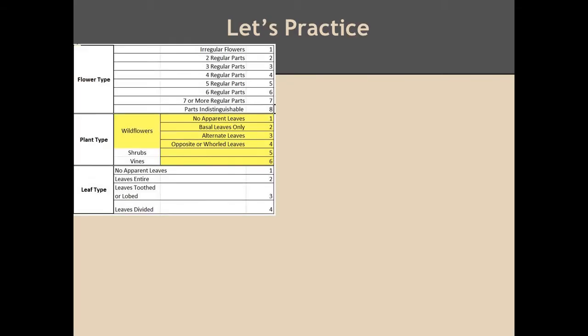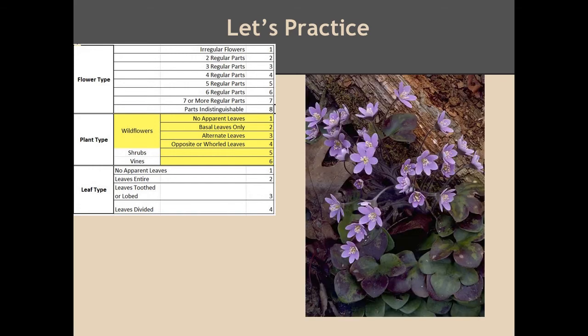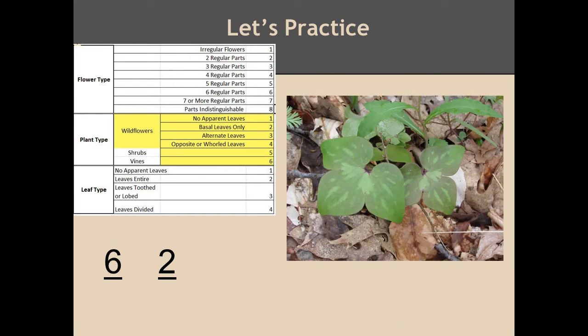Now that we have walked through the process, try practicing with the next seven flowers using the chart in the upper left-hand corner. I will give you about four seconds per section and you can check your answers with mine. Here is flower number one. Start with flower type — did you count six regular parts? Let's move to plant type — these leaves are growing from the base of the plant. Did you get basal leaves? Lastly, the leaf type — do you see these as lobed leaves? There is your first three-digit code.